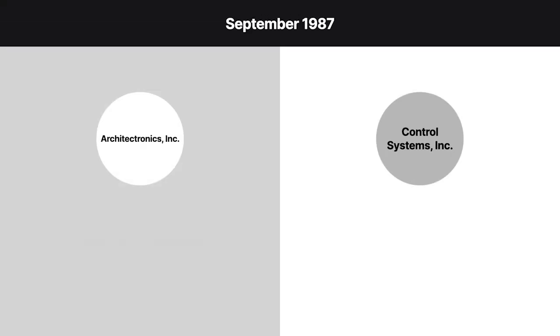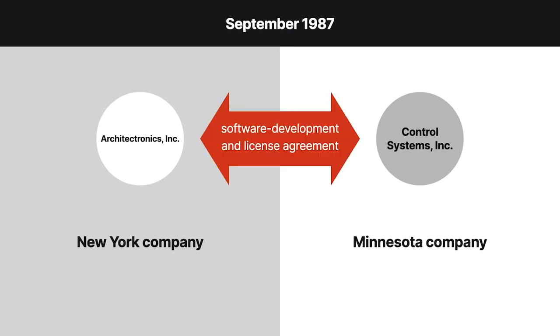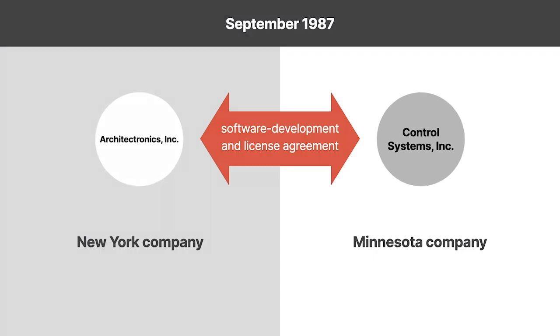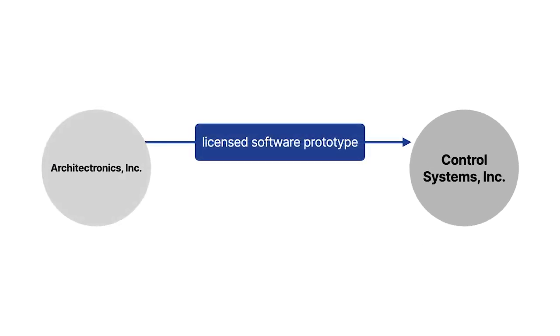Architectronics, a New York company, and Control Systems, a Minnesota company, entered a software development and license agreement. Under the agreement, Architectronics licensed its software prototype to Control Systems.